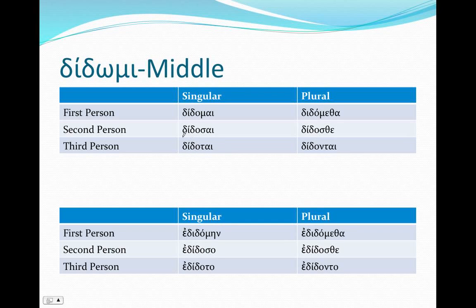Let's take a look at the middle. In the middle, all short stems: didomai, didosai, didotai, didometha, didosthe, didontai. And in the imperfect: edidomēn, edidoso, ededoto, edidometha, ededosthe, ededonto.